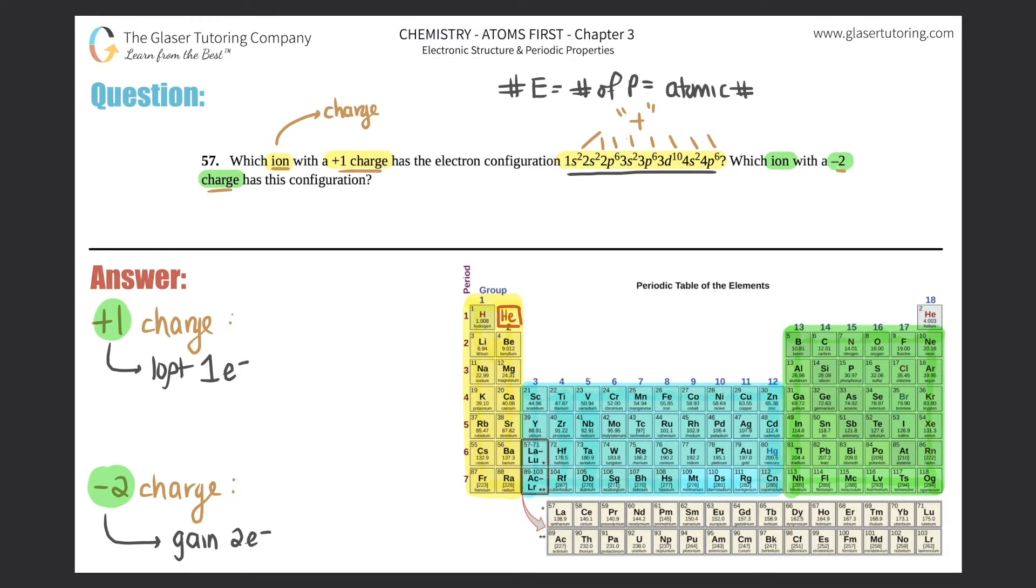If we add all of those up, that would be the total number of electrons in this pseudo atom: 2 + 2 + 6 + 2 + 6 + 10 + 2 + 6 = 36.